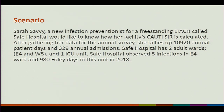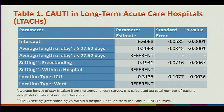Safe Hospital has two adult wards, E4 and W5, and one ICU unit. Safe Hospital observed five infections in E4 ward and 980 Foley days in this unit in 2018. Here is the table you can also find in your SIR guide — the model for CAUTI long-term acute care hospitals. It includes your intercept, the variables included in the model, their parameter estimates, the standard error, and the p-value, indicating that these are statistically significant predictors.